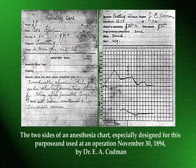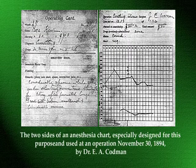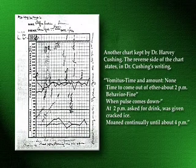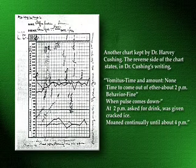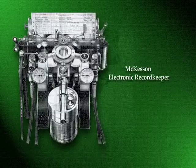Anesthesia record keeping dates back to records generated by Dr. E.A. Codman and Dr. Harvey Cushing in 1894. These records, reported to have been initiated as a contest between the two physicians, were to serve as a means for the two to improve their practice and avoid complications.